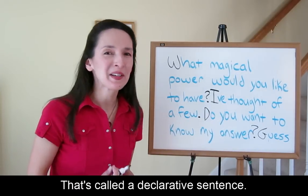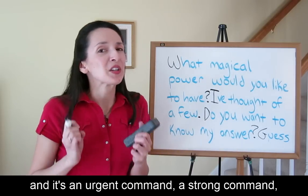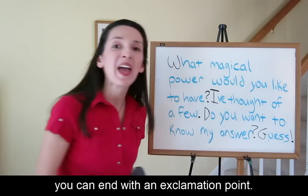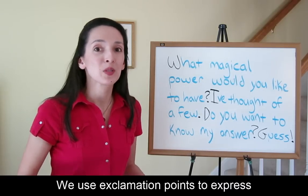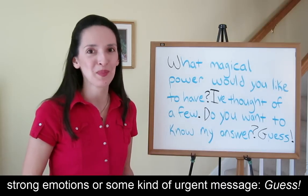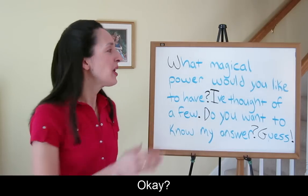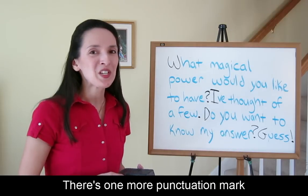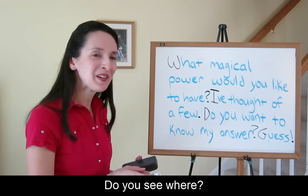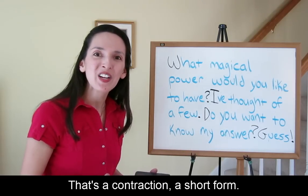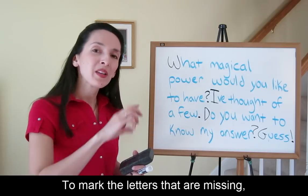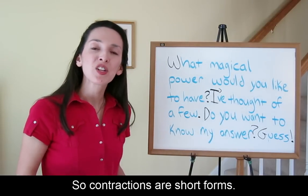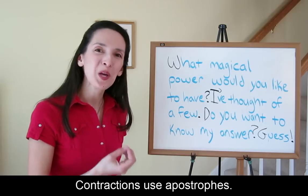That's called a declarative sentence. Now, if you're giving a command and it's an urgent command, a strong command, you can end with an exclamation point. We use exclamation points to express strong emotions or some kind of urgent message — 'Guess.' Punctuation makes the purpose of each sentence clear. There's one more punctuation mark I need to add here. Do you see where? Right there. That's a contraction — a short form. To mark the letters that are missing, we use an apostrophe. So, contractions are short forms, and contractions use apostrophes.